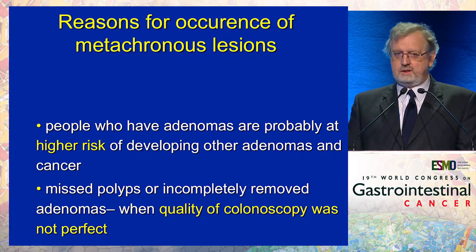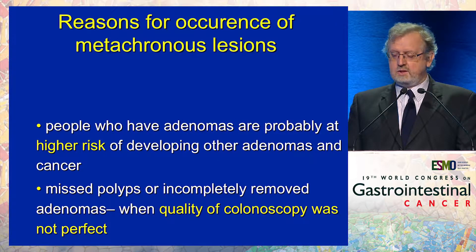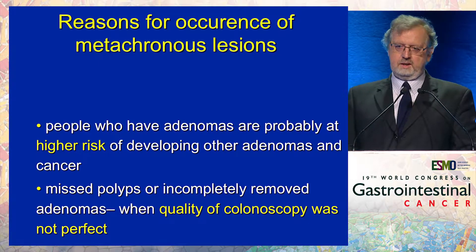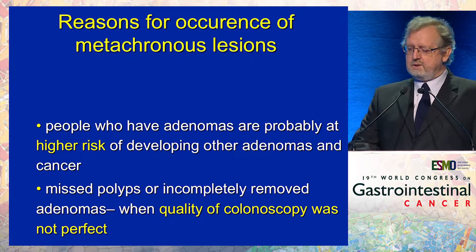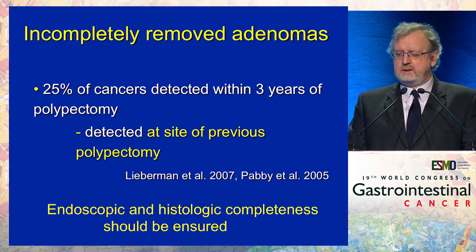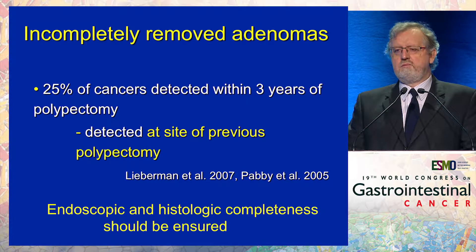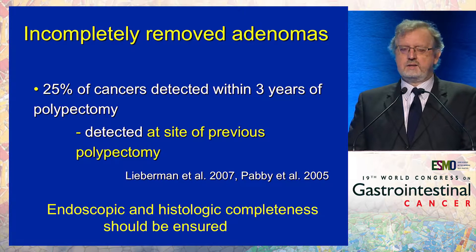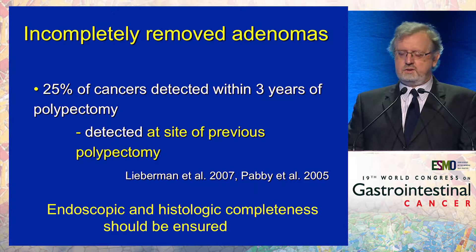The other reason for the occurrence of new adenomas after removal is that some of them are missed polyps or incompletely removed adenomas from the initial examination. This occurs when the quality of colonoscopy was not perfect. At least 25% of cancers arising within three years after polypectomy are at the same site of a previous polypectomy that was thought to be complete — but was not.